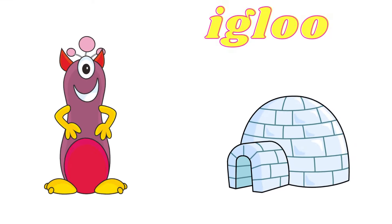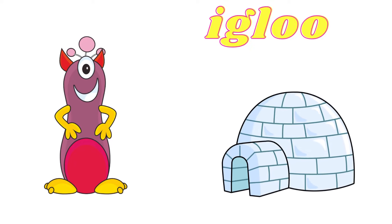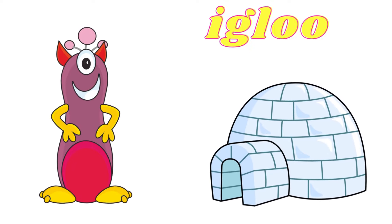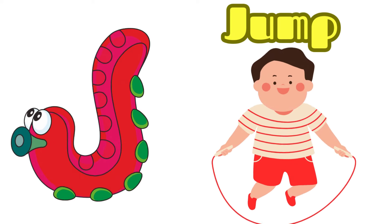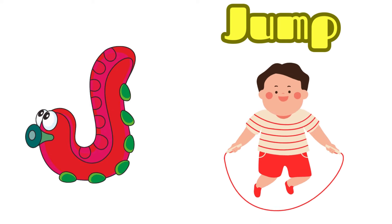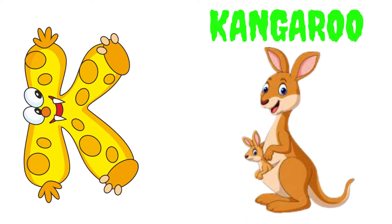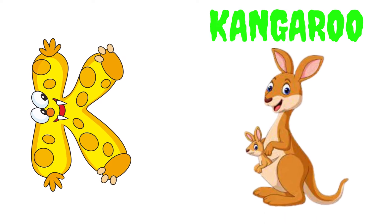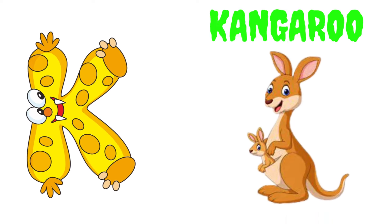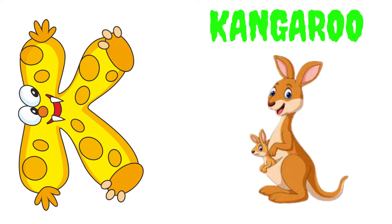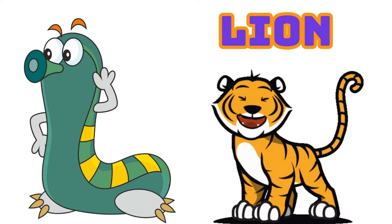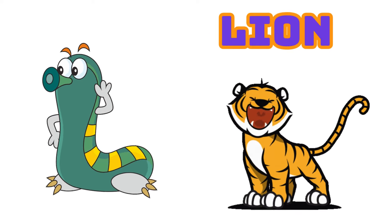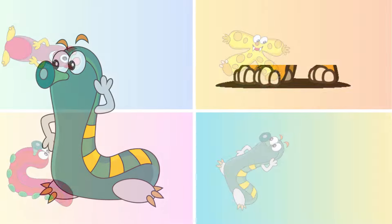I is for Igloo, I-I-Igloo. J is for Jump, J-J-Jump. K is for Kangaroo, K-K-Kangaroo. L is for Lion, L-L-Lion.